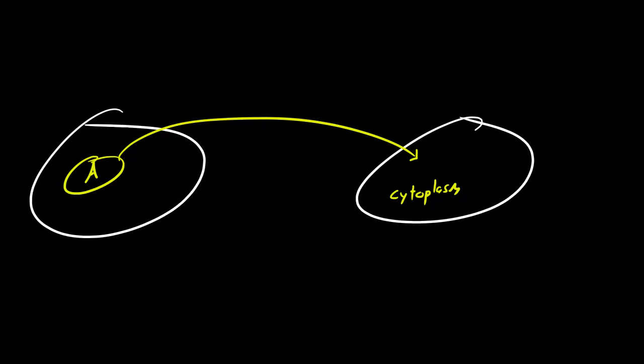What would happen is cell B—we'll call this one cell A over here—it would start behaving according to the instruction from the new nucleus, nucleus A.